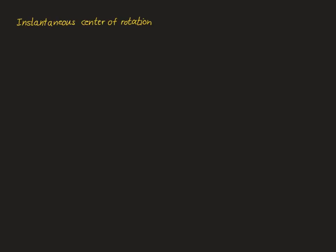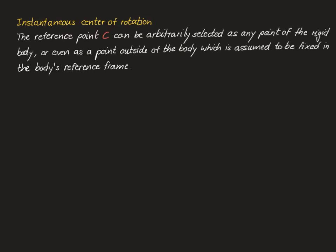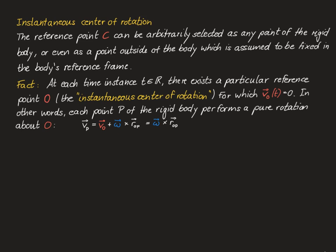For the final part of our review, let's look at the instantaneous center of rotation. We have made no assumption for the choice of reference point c — we could use any point of or even outside the rigid body. It is a fact that at each time instance there exists a particular reference point for which the velocity vector is zero, called the instantaneous center of rotation. The entire rigid body performs a pure rotation about this point.